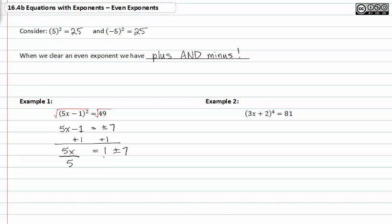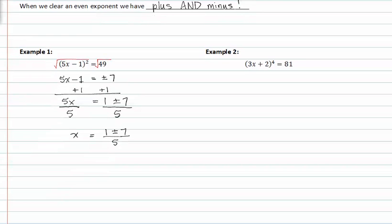Dividing by five to isolate x, we get x is equal to one plus or minus seven over five. We should get two different solutions or values for x at this point. The plus option one plus seven would give me eight-fifths, and the negative option would be one minus seven or negative six-fifths. So x is equal to eight-fifths or negative six-fifths.